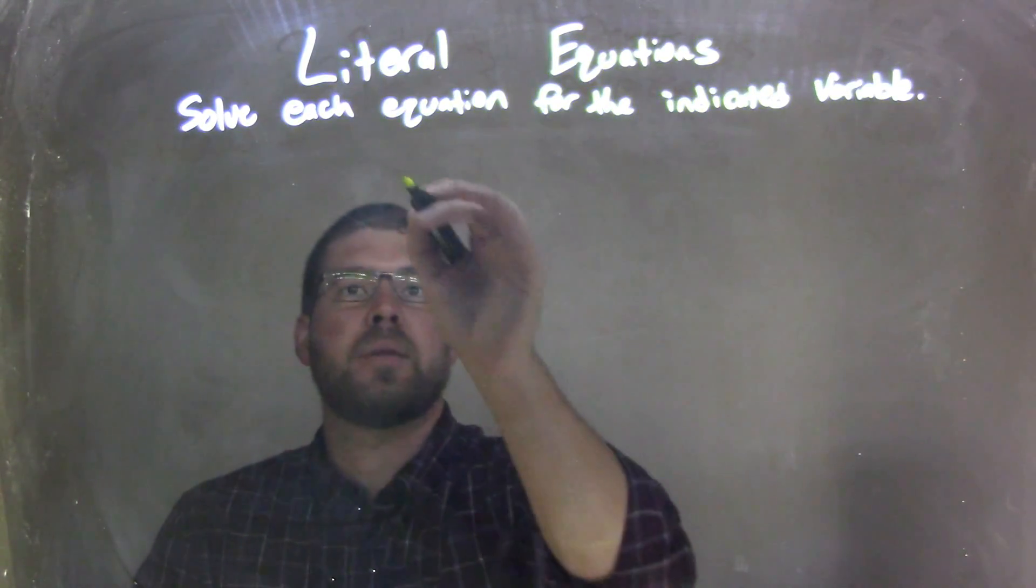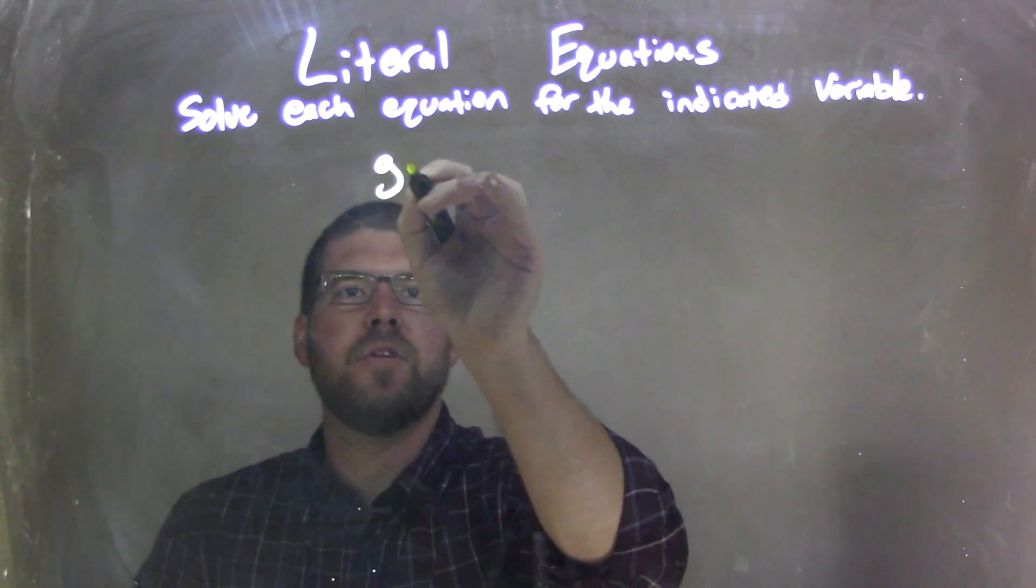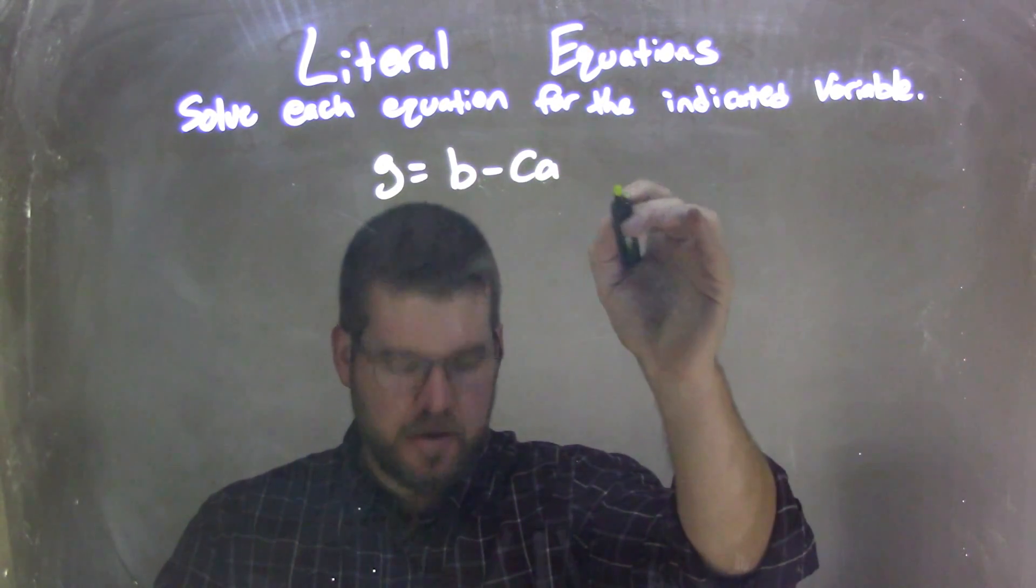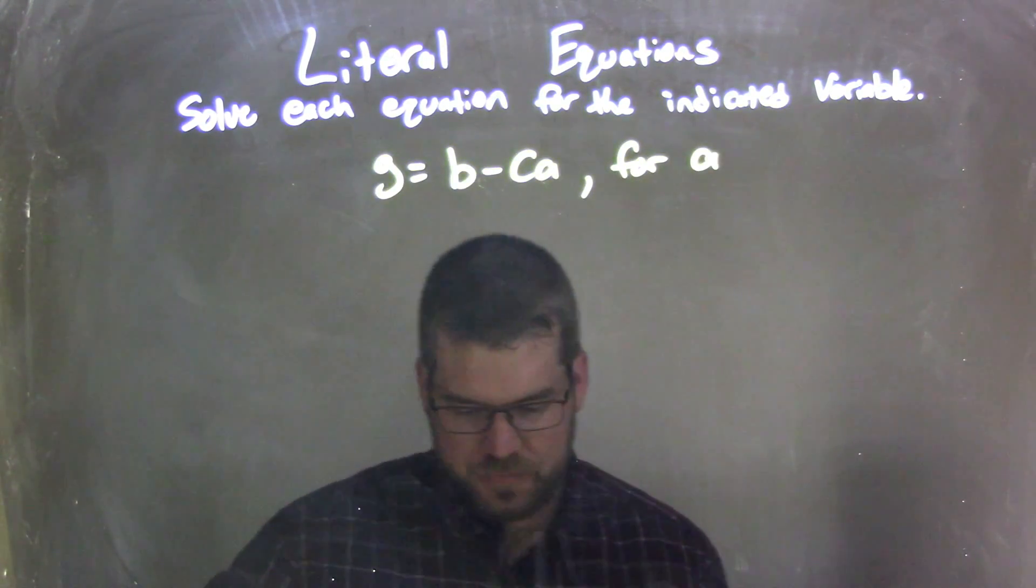So if I was given this equation, G equals B minus CA, and we're solving that for A.